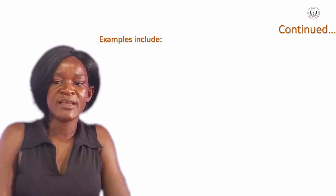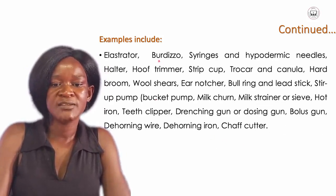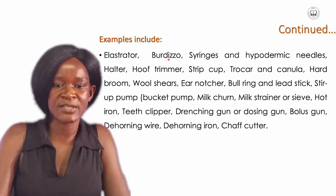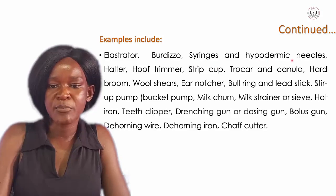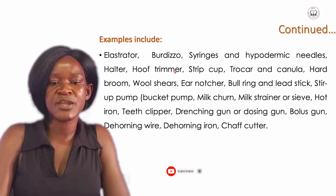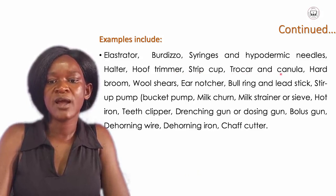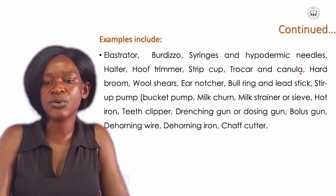Examples of livestock production tools and equipments include: illustrator and Burdizzo, which are used for castration. We have hoof syringes and hypodermic needles used for vaccination. The hoof trimmer is used for trimming overgrown hoofs. We have strip cup, and trocar and cannula — needle-like equipments used to relieve animals from bloat.